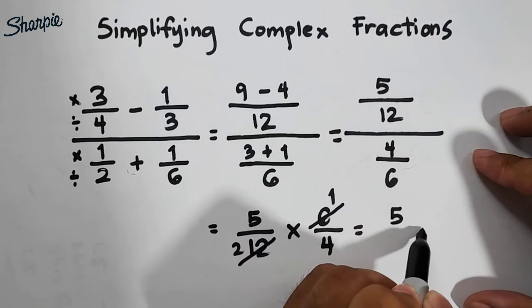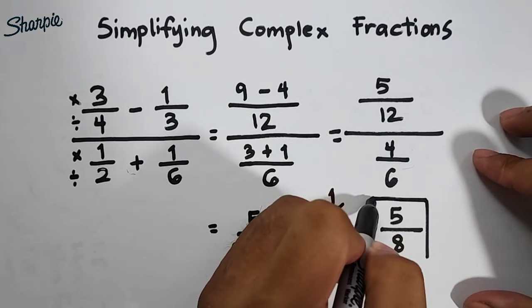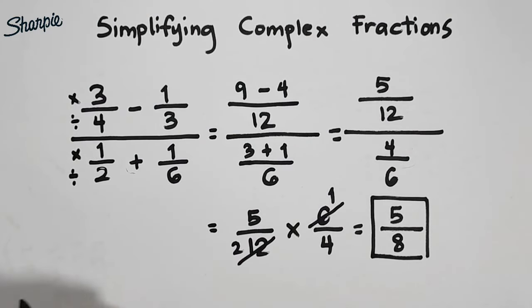So what we have now in the numerators is 5 times 1, which is equal to 5, over 2 times 4, which is equal to 8. So this is now the answer for item number 1. In the next part of our video, I will give you another example wherein we will simplify complex fractions.